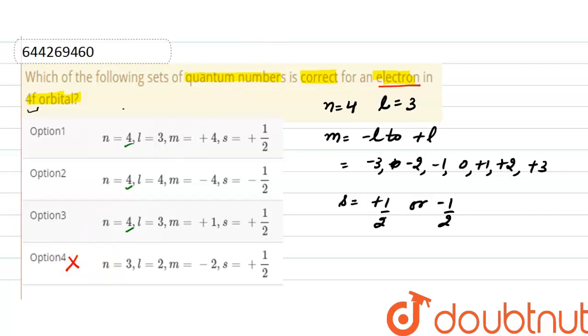Now moving on to value l, the value of l is 3. So here it is 3, correct. In option 2 the value of l is 4 which is incorrect.